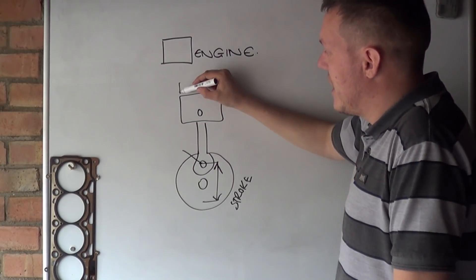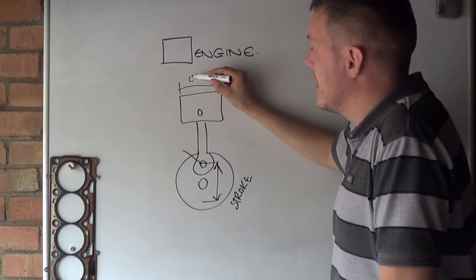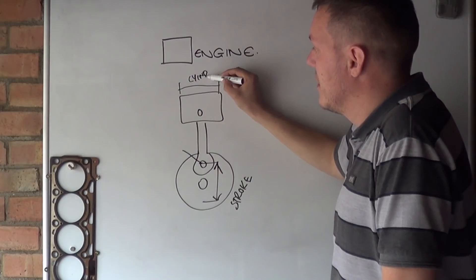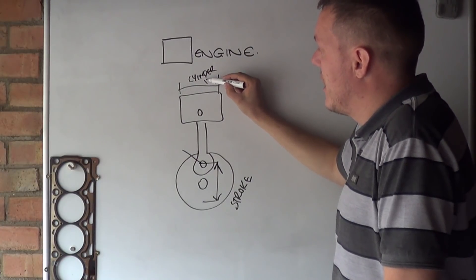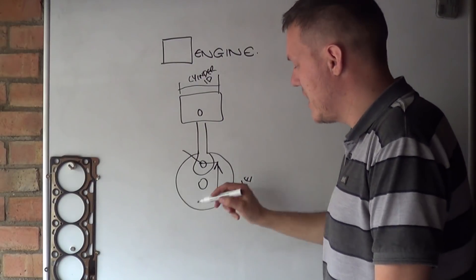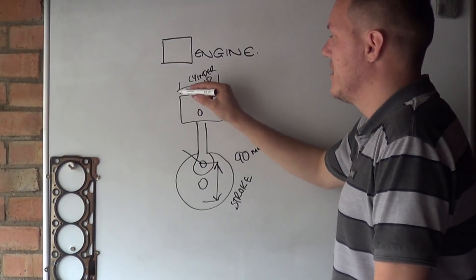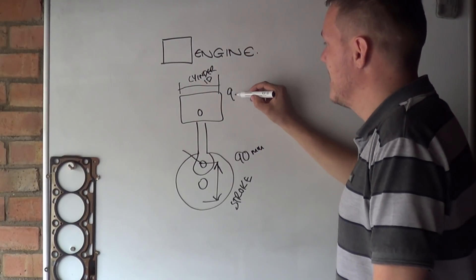And our piston diameter, or our cylinder diameter is here, and that's our cylinder ID. So it's the relationship between the two. If this stroke here, just say it is 90mm and the piston width is 90mm...